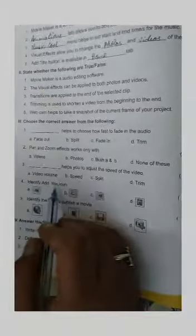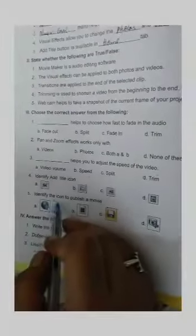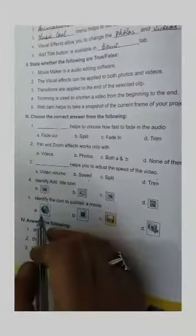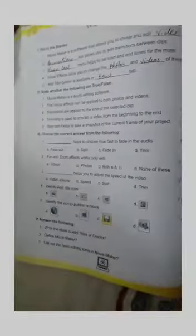Fourth one, identify and add the title icon. A. Fifth one, identify the icon to publish in movies. A. Now come to page number 87.